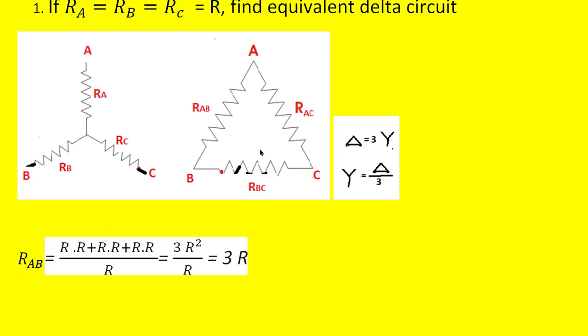Let us apply the formula for this case. To get the Delta branch resistance Rab — the equivalent resistance in Delta form for the star-connected system — we first multiply Ra with Rb, then add Rb·Rc, then add Rc·Ra, and divide that by the branch resistance which is not connected to A and B.